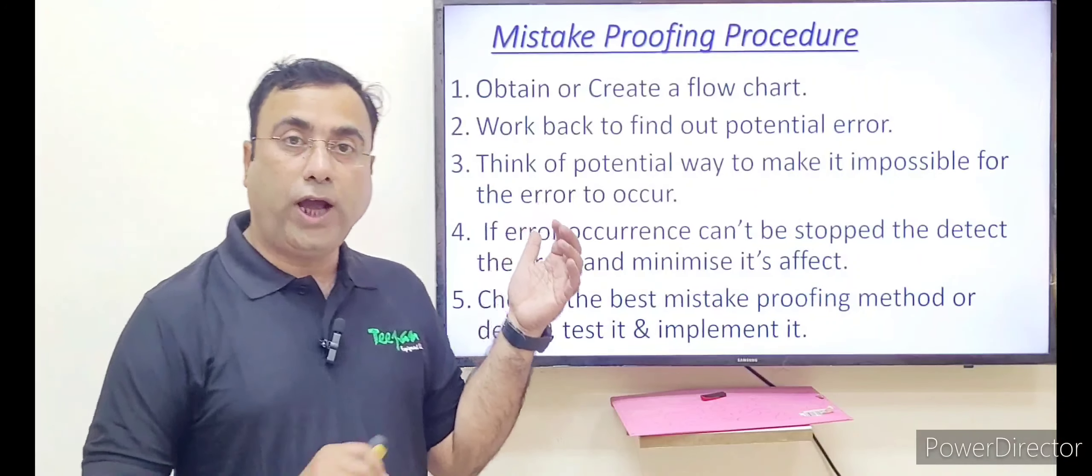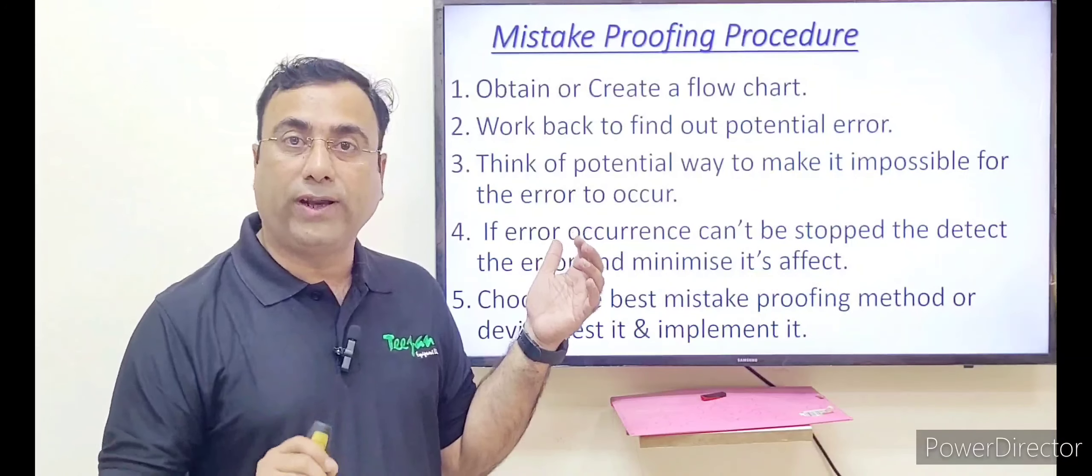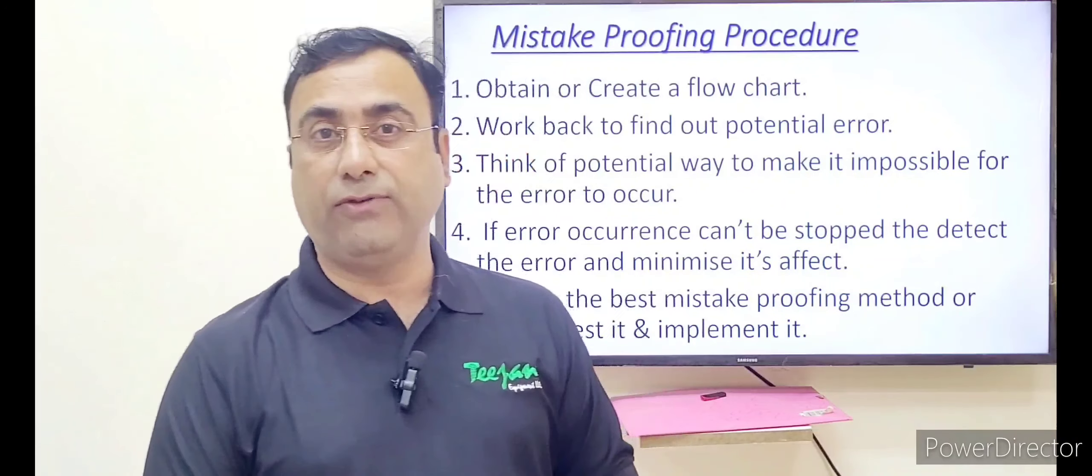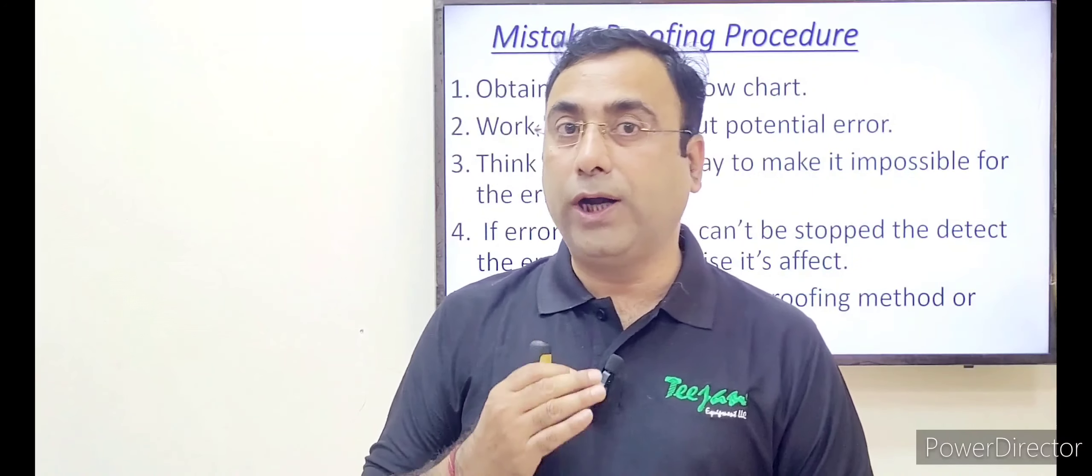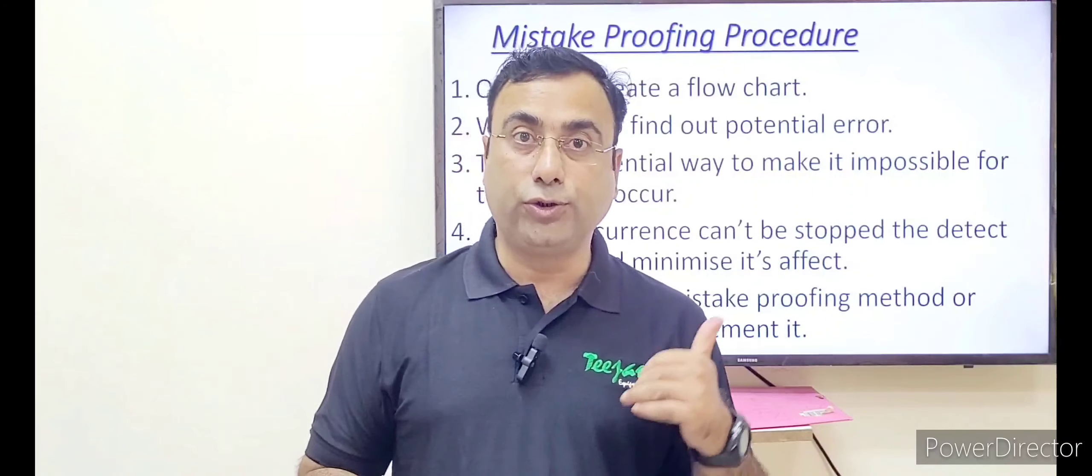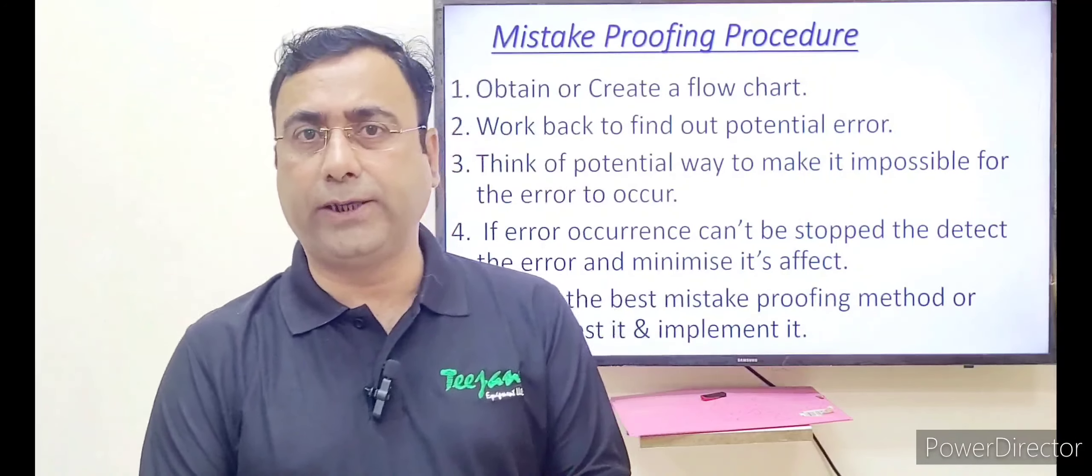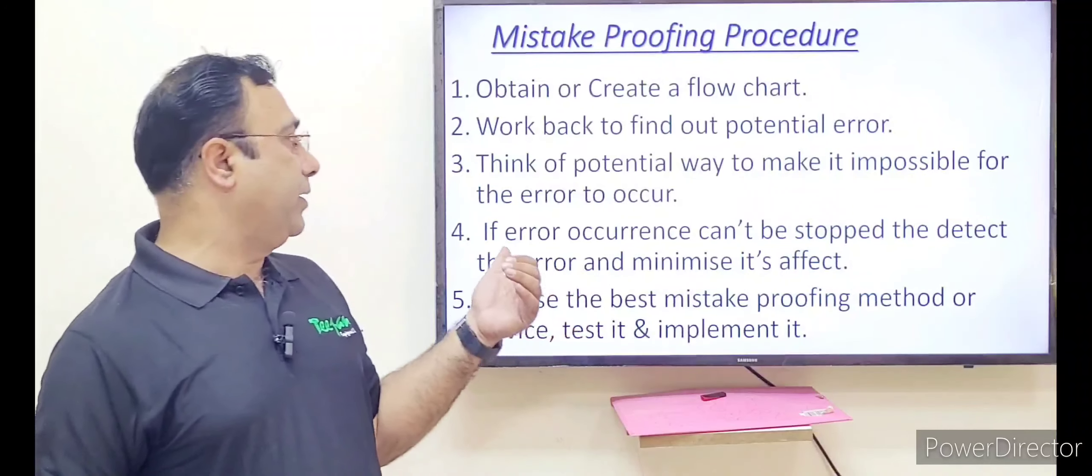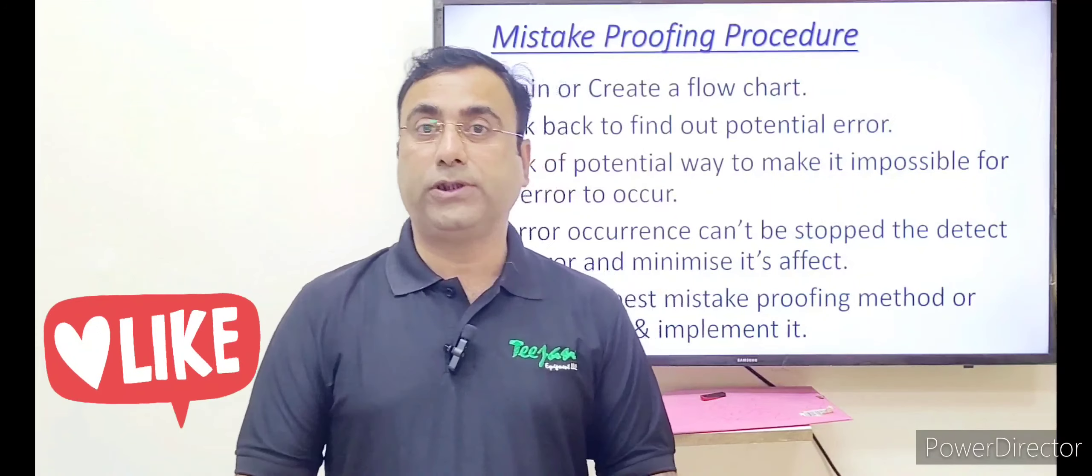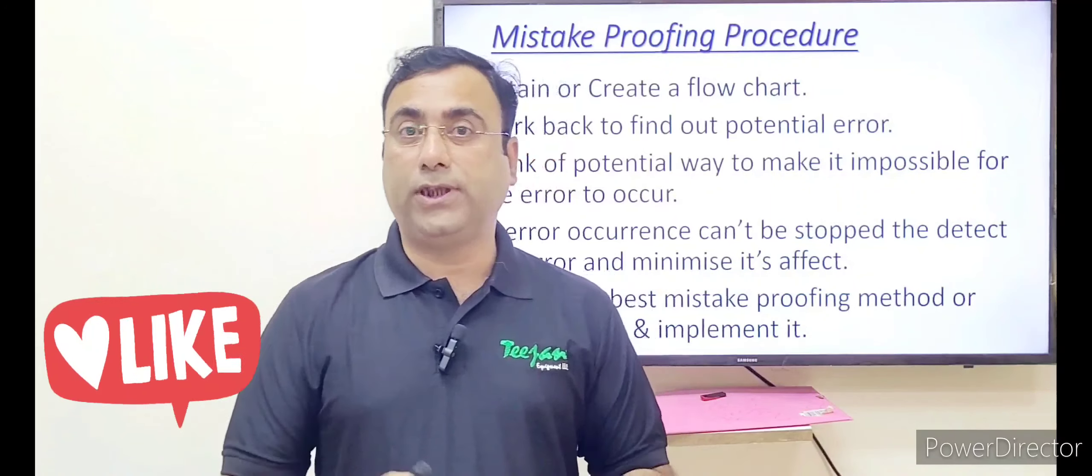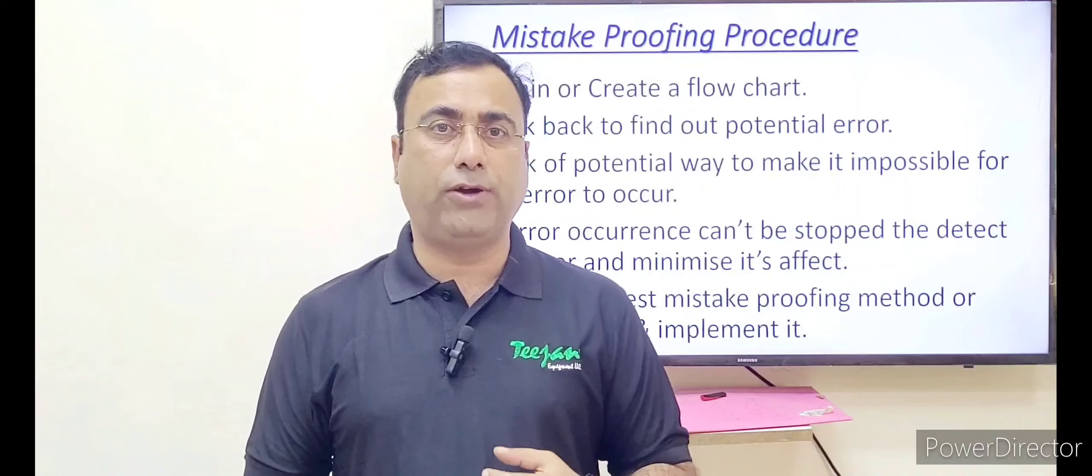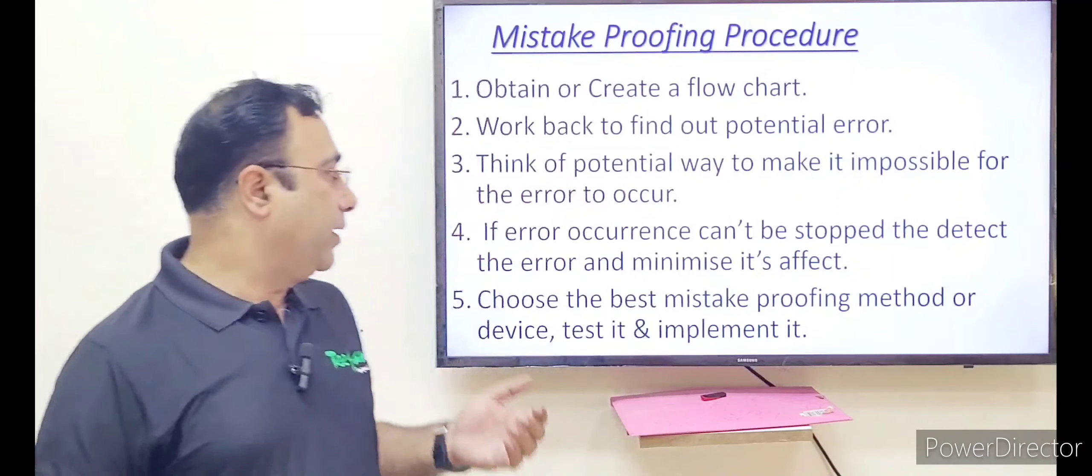In the initial state, you have to mark where the human can make an error. Then you have to find out the potential way to get removed or eliminate this mistake. Here you can use the error finding method root cause analysis. Then the third one is, if the error occurrence cannot be stopped, like something that you cannot avoid, then you have to find out how to minimize the impact, how we can go without the major losses.